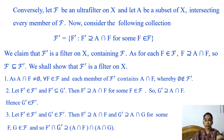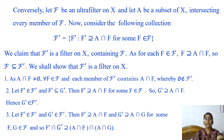Next we show that F' is a filter on X by checking the three properties. For the first property: A ∩ F is non-empty for every F in filter F, because we assumed A intersects every member of F. And each member of F' contains A ∩ F by definition of F', so no member of F' is empty.